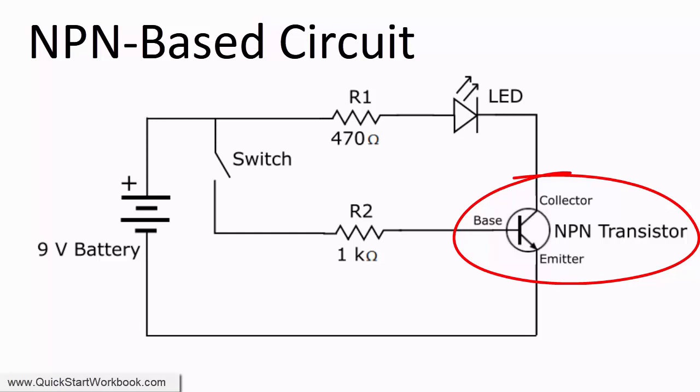Therefore, the base of the transistor must be connected to a positive voltage for current to flow into the base. This happens when the switch is closed.